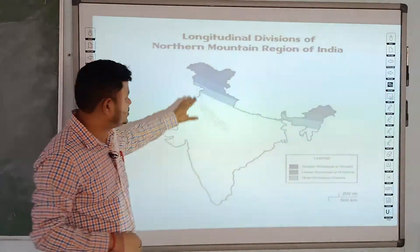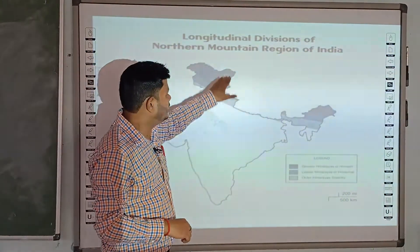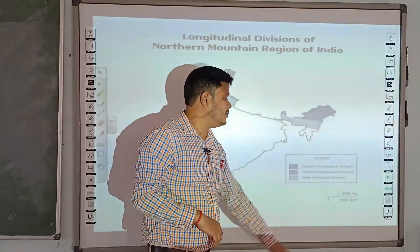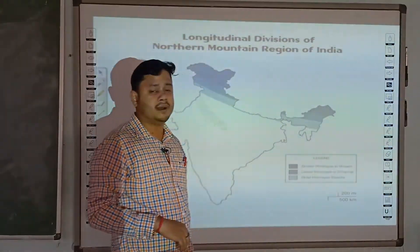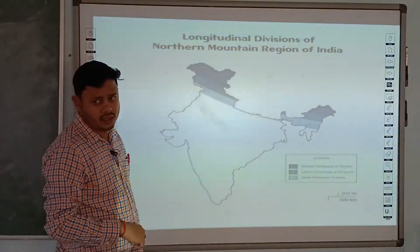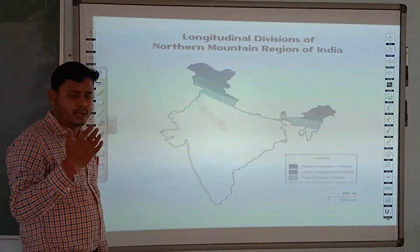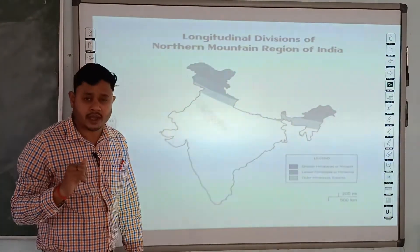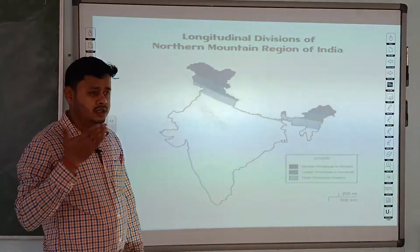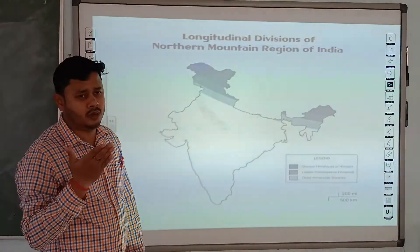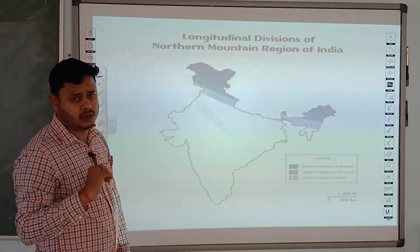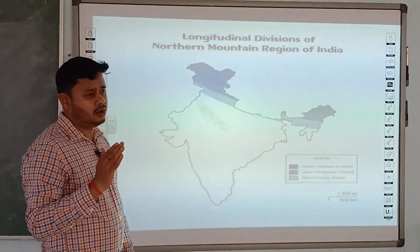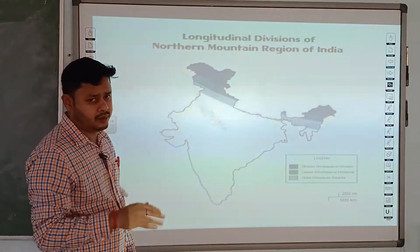From the sediment brought by the first collision, the upper range is created, which we call the Greater Himalaya and Himadri range. The northern part of the range we call Himadri — so the first collision range we call Himadri and the Greater Himalayas.